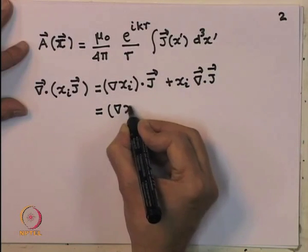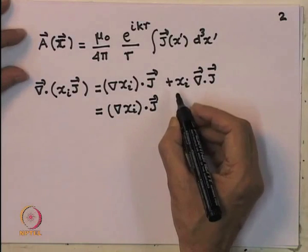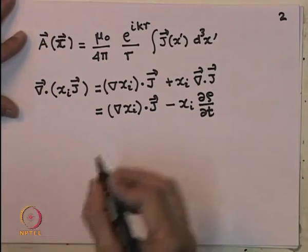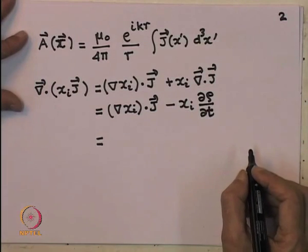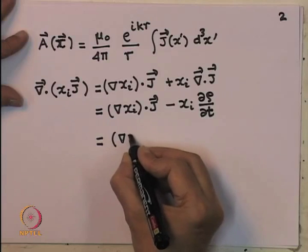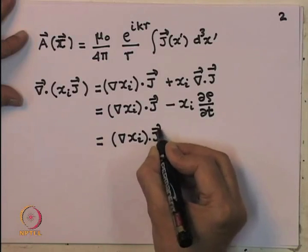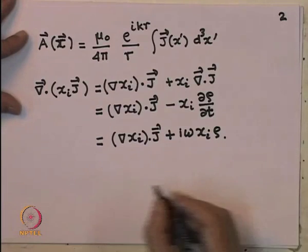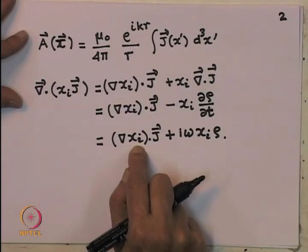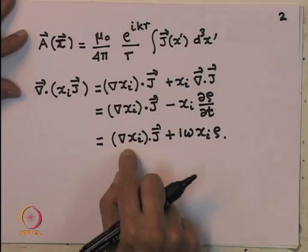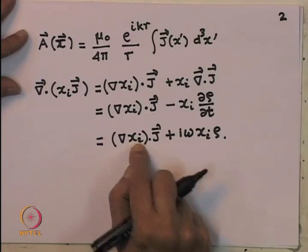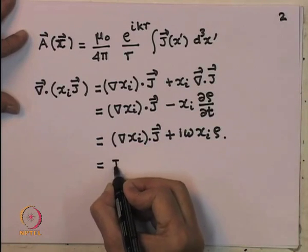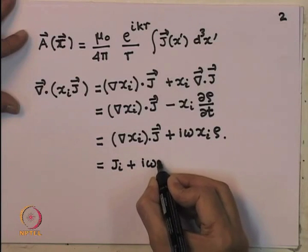By the equation of continuity, del·J equals -dρ/dt. Since the time variation is e^(-iωt), del·J equals iωρ. Therefore, del·(x_i J) = J_i + iω x_i ρ. This means the i-th component of ∫J d³x' can be written as ∫del·(x_i J) d³x' minus iω ∫ρ x_i d³x'.